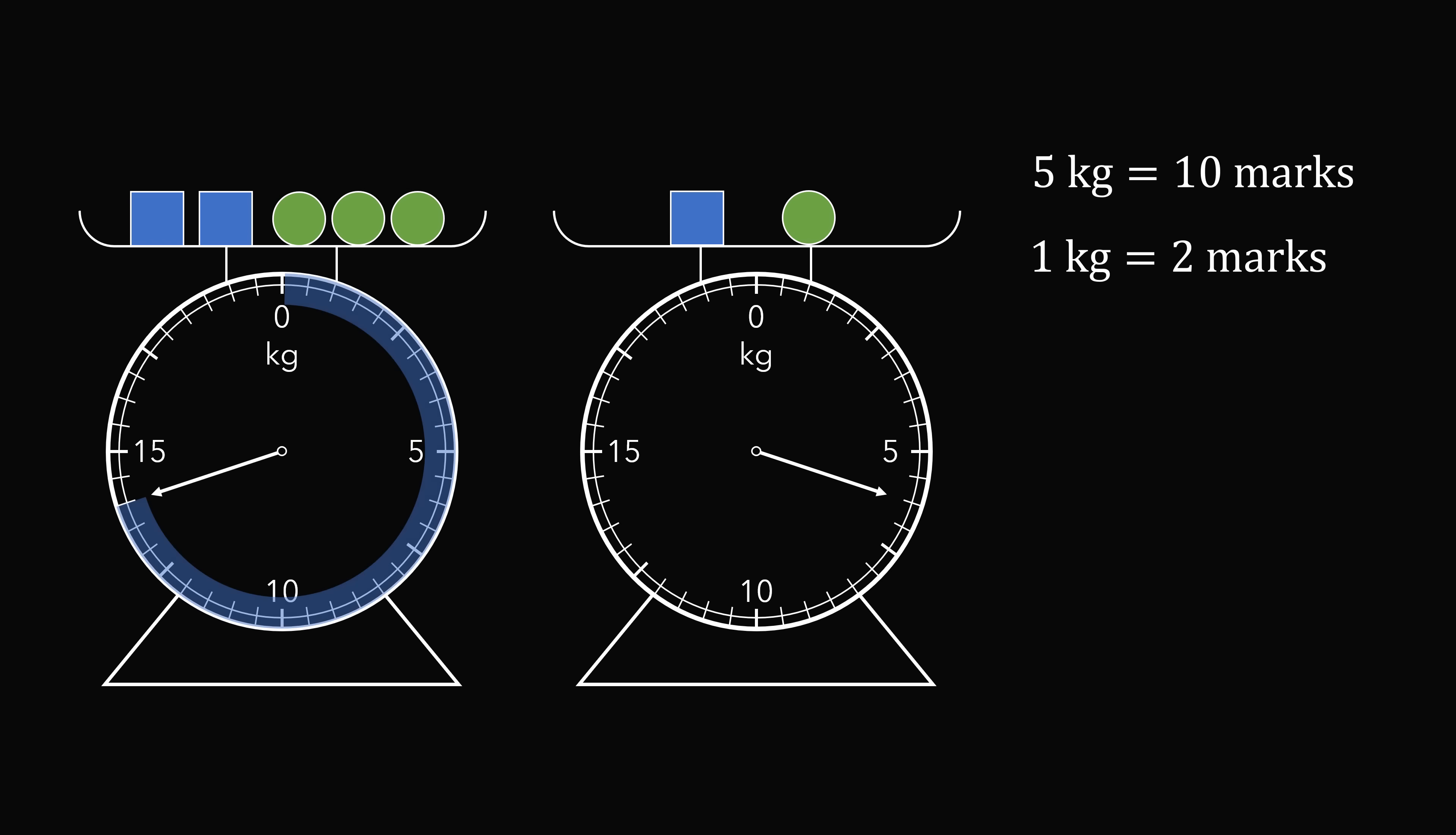Now let's take a look at the arrow on the left scale. The arrow is pointed 2 marks short of 15 kilograms. 2 marks equals 1 kilogram. So we take 15 kilograms minus 1 kilogram to get the arrow is pointing to 14 kilograms.